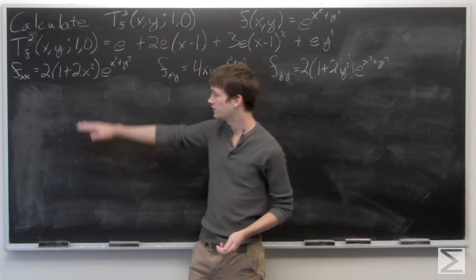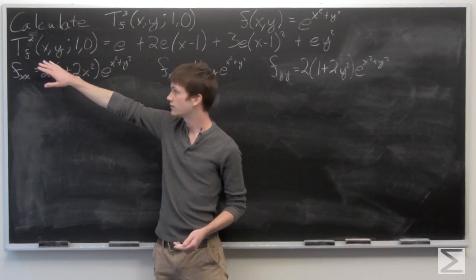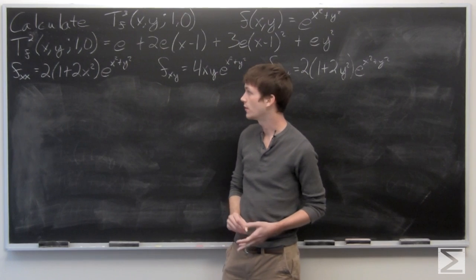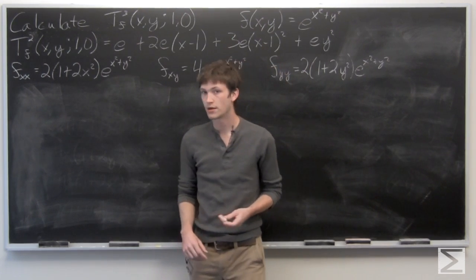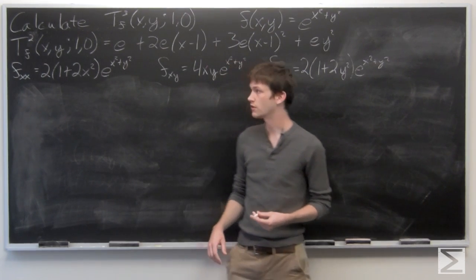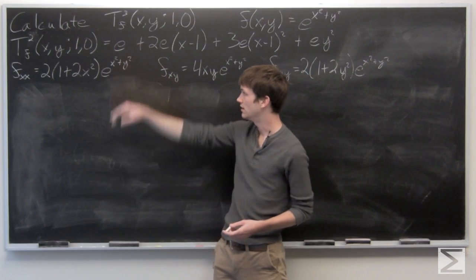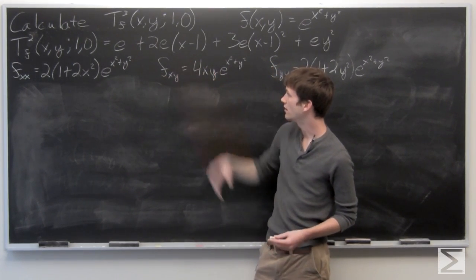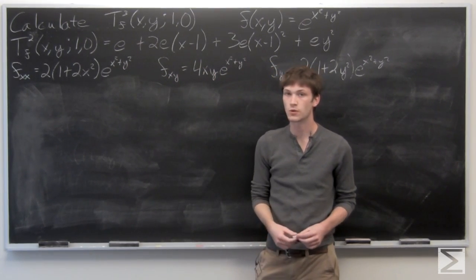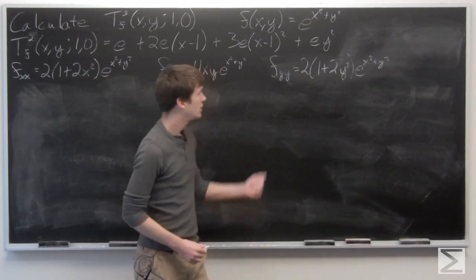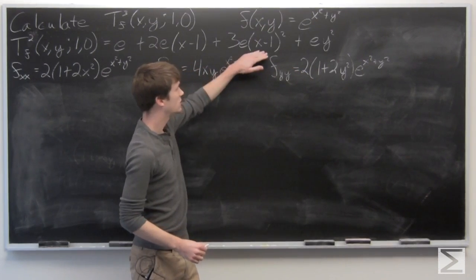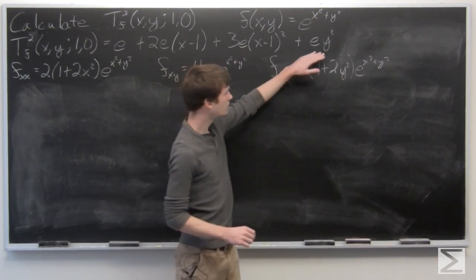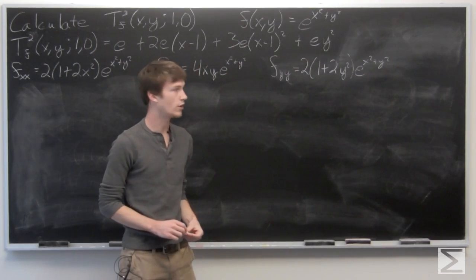From a previous exercise, we know that the second order Taylor polynomial of f(x,y) around the point (1,0) is e plus 2e times the quantity x minus 1 plus 3e times the quantity x minus 1 squared plus e times y squared.